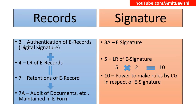We are going to talk about records and signatures. A record here is always an electronic record. Signature means a digital signature or electronic signature — we will see that. So first, records. Section 3 deals with authentication of electronic records. In reality, it is not just about electronic records — it deals with how you are going to authenticate the electronic record, that is, through digital signatures. Section 3 is for authentication of electronic records. Section 4 deals with legal recognition of electronic records — where is the legal recognition? That is Section 4.